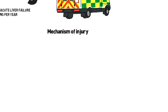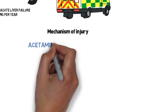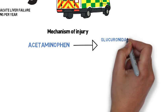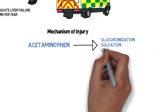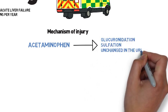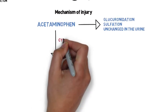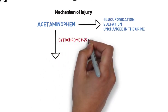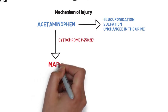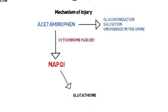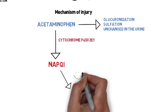So how does it cause liver injury? Normally, it's metabolized through glucuronidation and sulfation, or it's excreted unchanged in the urine. About 5% of a therapeutic ingestion is metabolized through cytochrome P450-2E1 to the toxic metabolite NAPQI. Normally, NAPQI is bound by intracellular glutathione, and then it's excreted harmlessly.